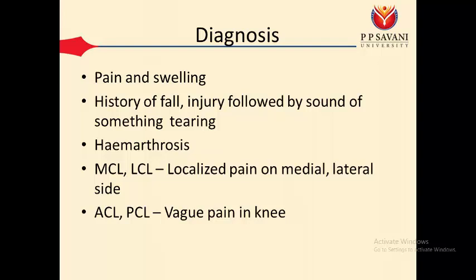For MCL and LCL injuries, pain is very localized — the patient can pinpoint pain on the medial or lateral side of the knee. This is because both ligaments are superficial, making localized pain easy to identify. In contrast, ACL and PCL are deep intraarticular ligaments, so pinpointing localized pain is very difficult. The patient will complain of vague, generalized knee pain rather than being able to point to a specific location.